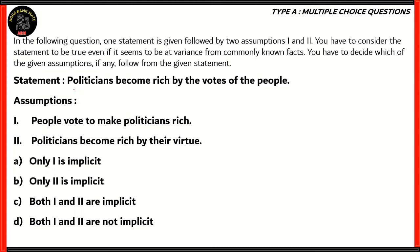The statement here is that politicians become rich by the votes of the people. We'll consider the statement to be true, and now we need to judge both assumptions by this statement and see if the assumptions describe the statement correctly — whether the assumption would be obvious because of the statement. We need to make sure that these are related; if they are related, then we'll choose our options.